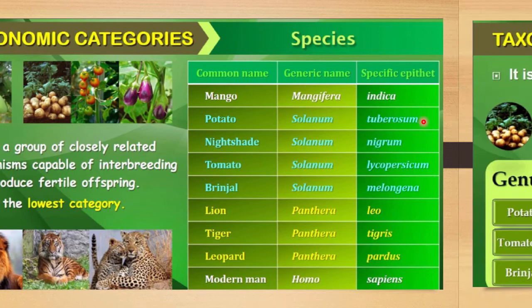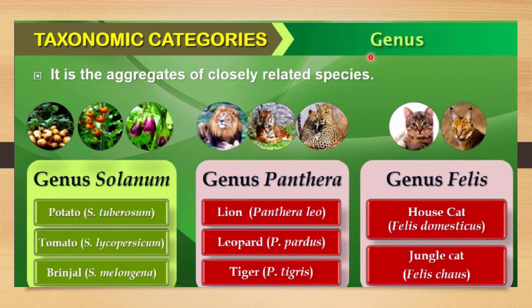The greenish color indicates the species name. The next category is genus, which is higher than species. Genus is an aggregate of closely related species — many species together form a genus. For example, potato is Solanum tuberosum, tomato is Solanum lycopersicum, and brinjal is Solanum melongena. All three share the genus name Solanum, showing many species within one genus.